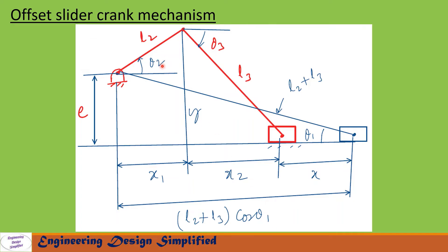When the crank rotates by an angle theta2, the coupler is also going to rotate in the clockwise direction by an angle theta3. The horizontal component of l2 will be x1, and similarly the horizontal component of l3 will be x2. At this point the slider moves from its original position — that is the rightmost position — to this position, and the distance between these two points, which we call x, is the displacement.